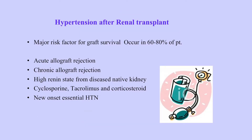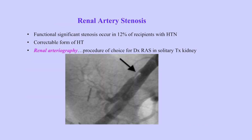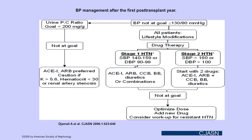Hypertension is very prevalent in transplant patients. It may be related to the kidney not working well or a high renin state, and immunosuppression also contributes. Always remember renal artery stenosis, because that is a correctable form of hypertension, so we have to have a high index of suspicion for it. Blood pressure management in the first post-transplant year: if patients have proteinuria, ACE inhibitors and ARBs should be considered. Otherwise, all patients should start with lifestyle modifications, then combinations depending on hypertension stage, optimizing those or adding new drugs or looking for other causes.